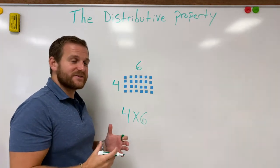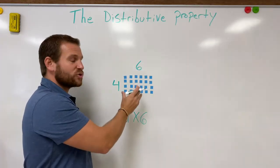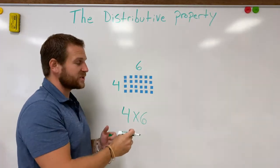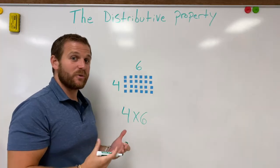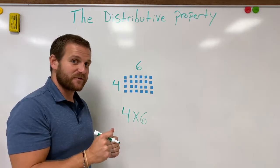What the distributive property allows us to do is break this up into different groups and identify the same total number of unit cubes as different multiplication problems. So instead of four times six, we're going to organize these in a different way.